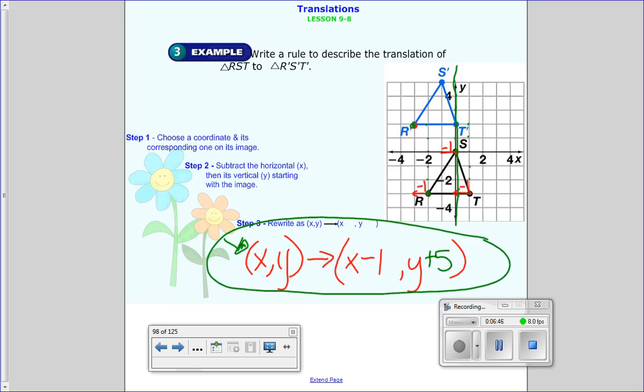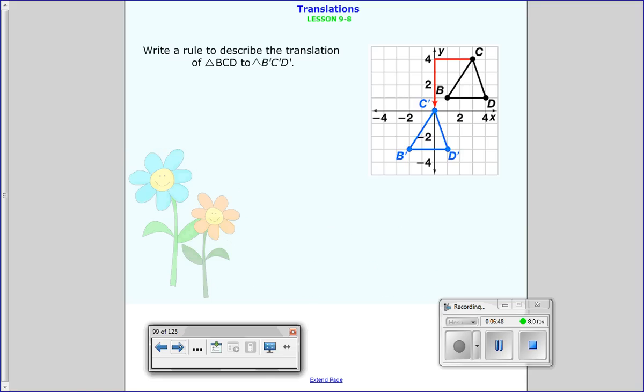Alright, let's try another one. Use a rule to describe this translation for triangle BCD to the image of triangle BCD. So again, you know you start with the original coordinates of x and y, use arrow notation, then figure out what you do for each. So I want you to try to do this, and when you're all done, come back and check your answers. Go ahead and pause me now.